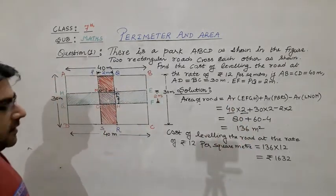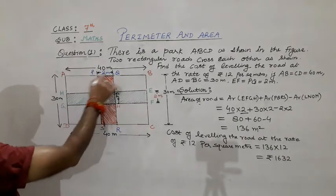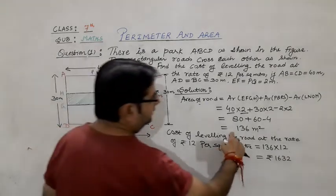So the total area of both the roads, that is EFGH and PQRS, is 136 square meters.